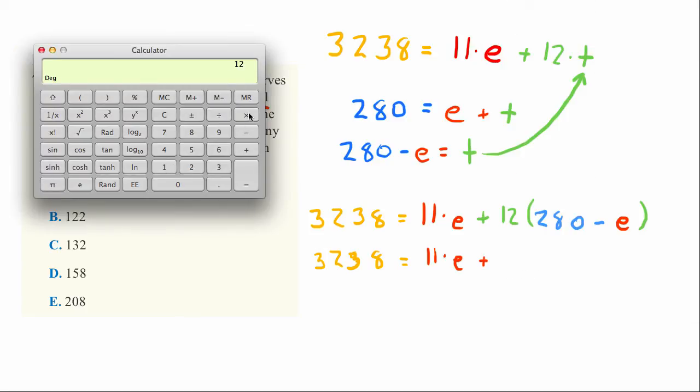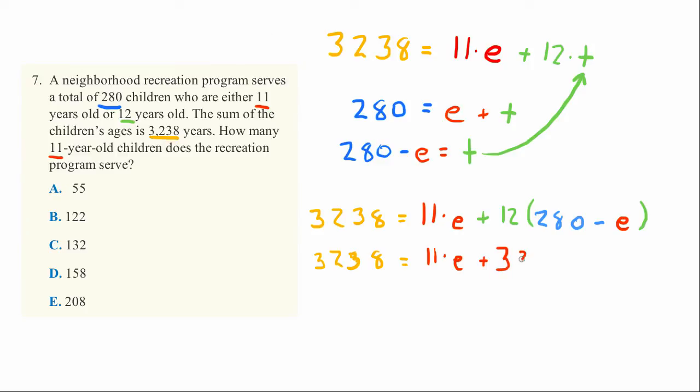So 12 times 280 equals 3,360, and 12 times negative E equals negative 12E.